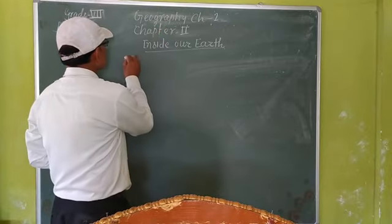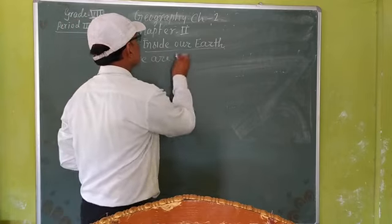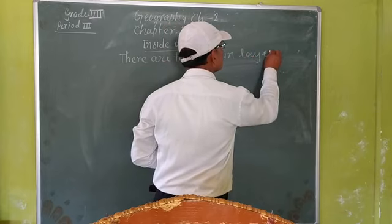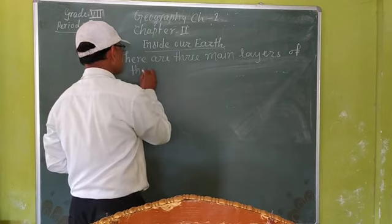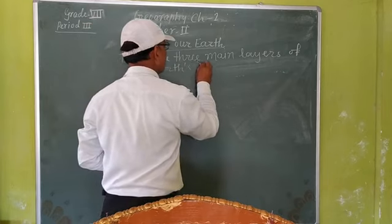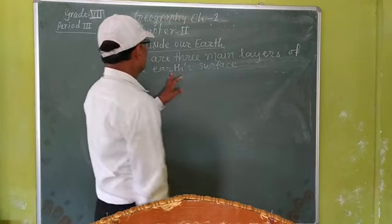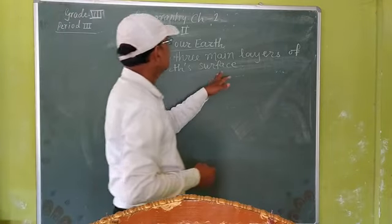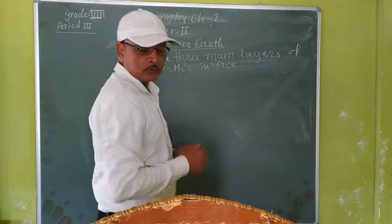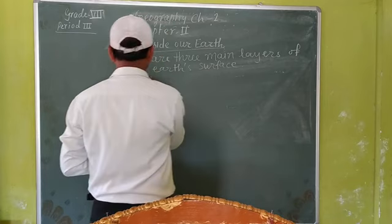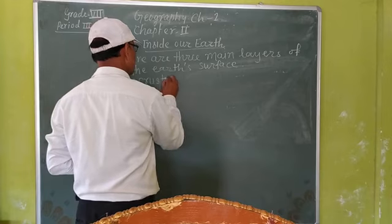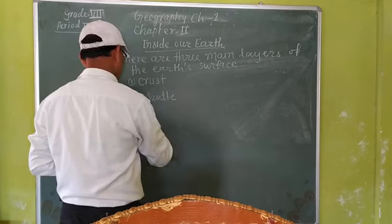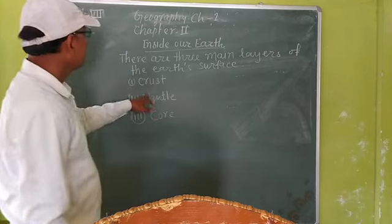There are three main layers of the Earth's surface. The Earth's surface is made up of three main layers: first, crust; second, mantle; third, core. These are the three main layers of the Earth's surface.